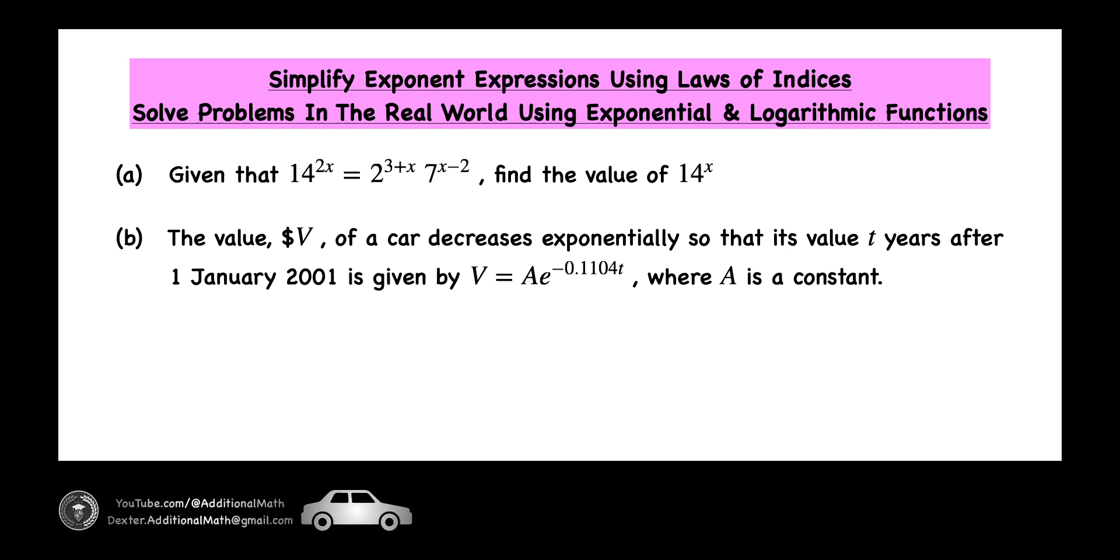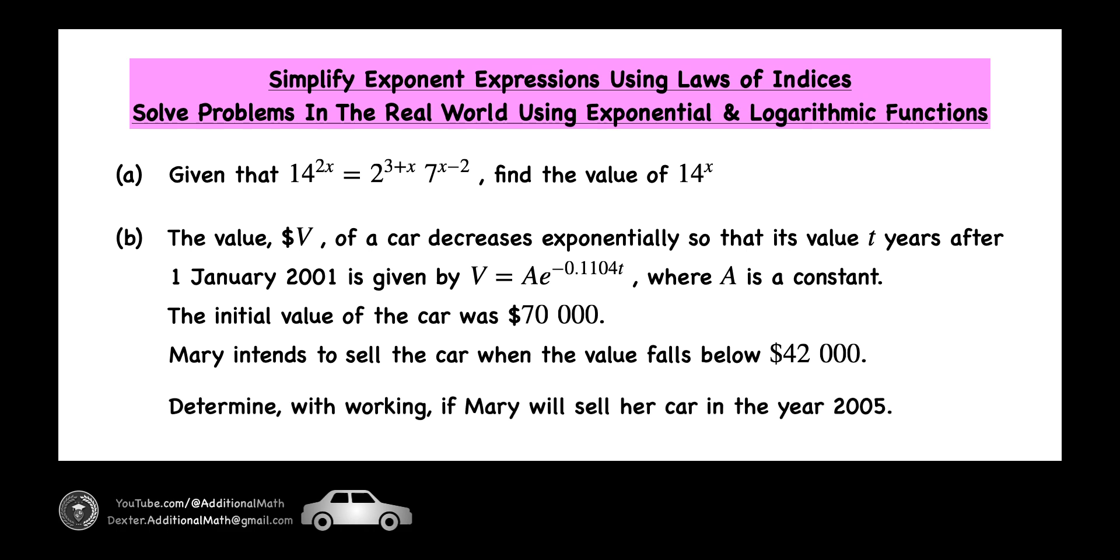In part b, the value of a car depreciates exponentially so that its value t years after 1st of January 2001 is modeled by v equals a multiplied by e to the power of negative 0.1104t, where a is a constant. The initial value of the car is $70,000. Mary intends to sell the car when the value falls below $42,000. Determine if Mary will sell the car in the year 2005.